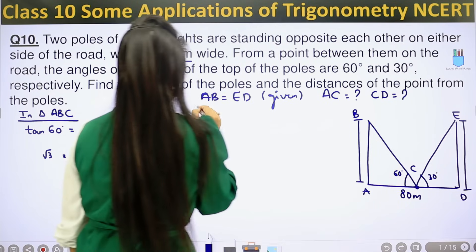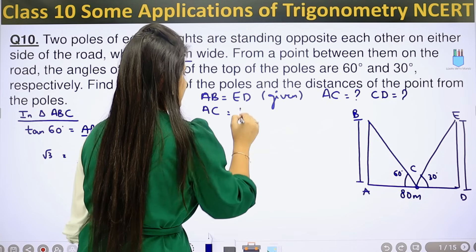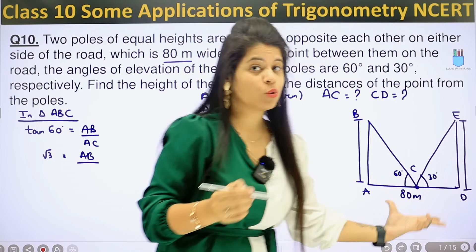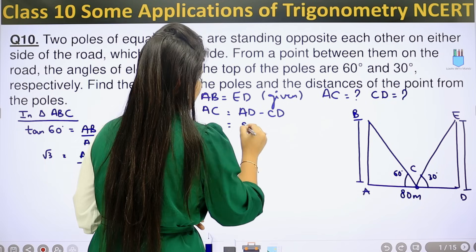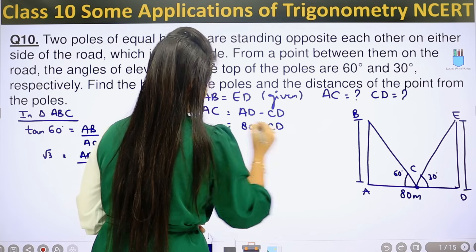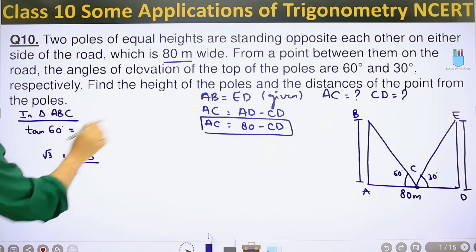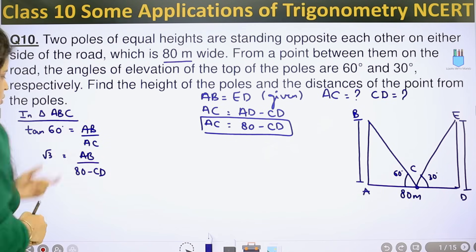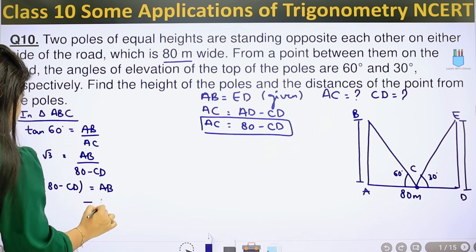So our tan angle is 60 degrees. Tan 60 degrees equals perpendicular AB over base AC. And tan 60 is root 3 equals AB over AC. If this full AD is 80 meters and I minus CD, I can write AC. So I can write it as 80 minus CD. So if I send it over here, this will be root 3 into 80 minus CD, and here I have the value of AB. So this will be my first equation.